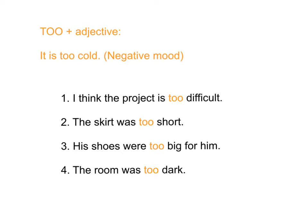可能做不到啦哦。好啦，example three: his shoes were too big for him. Shoes 是鞋啦，big 是大啦，他对鞋呢，对于他来讲真的太大啦，其实真的不用穿的啦。Example four: the room was too dark. Room 是间房，dark 是黑啦，间房实在太黑啦。